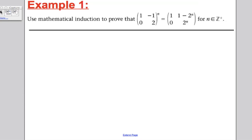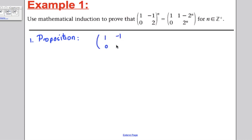Let's get straight on with an example. Use induction to prove that the following is true. Step 1: write down the proposition — what we are trying to prove. We are trying to show that the matrix (1, -1, 0, 2) raised to the power of n is equal to the matrix (1, 1 minus 2^n, 0, 2^n), for all n greater than or equal to 1.